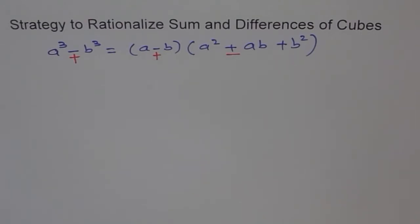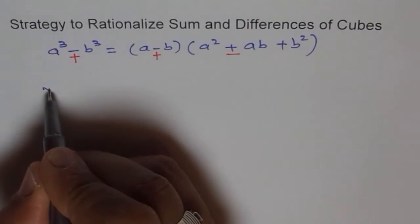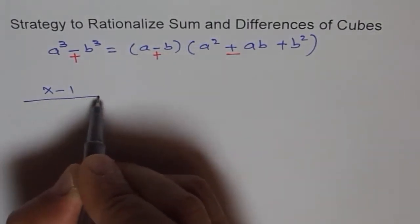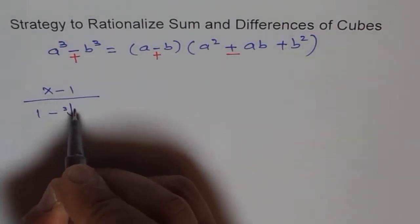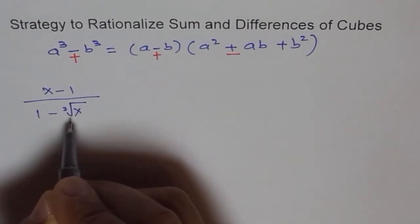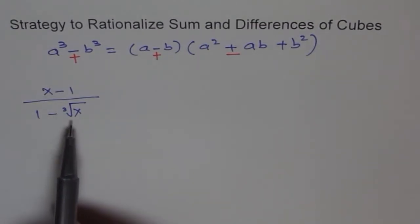Let me take an example to really show you how we should do rationalization of sums and differences of cubes. Now we will take an example like, let's say we have (x - 1) over (1 - ∛x). Now this is cube root of x. Since it is cube root and we don't want cube root in the denominator we will rationalize it.